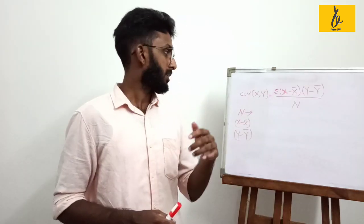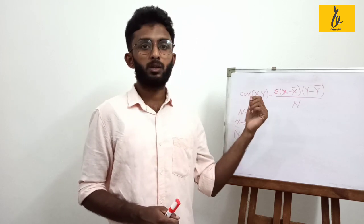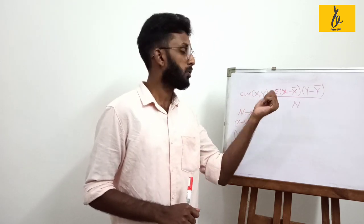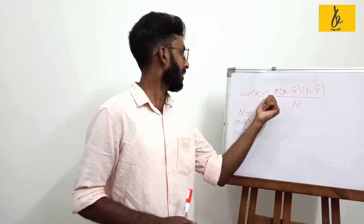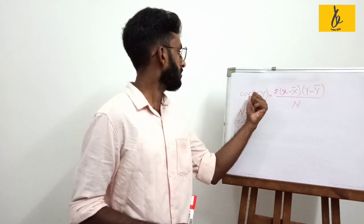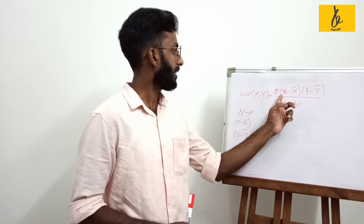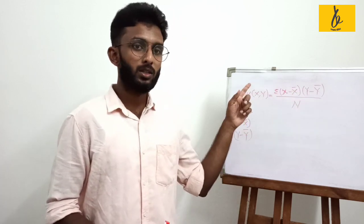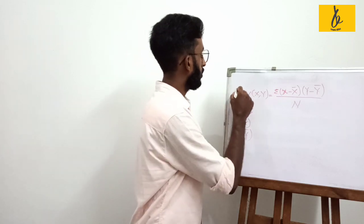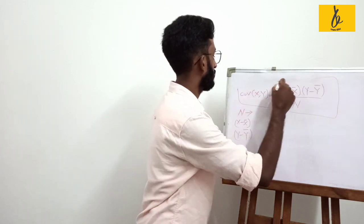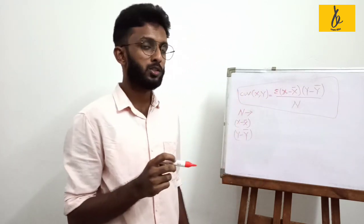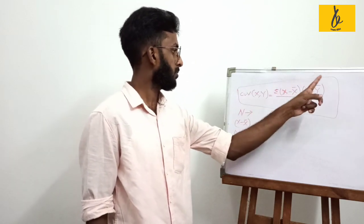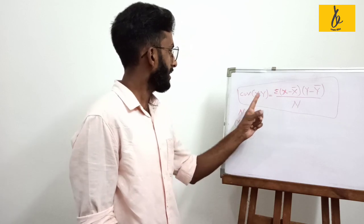In this method, there is a first equation. It is the covariance between two variables. The covariance between x and y is equal to summation of x minus x-bar into y minus y-bar, divided by n. This is the covariance of x, y.